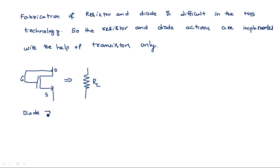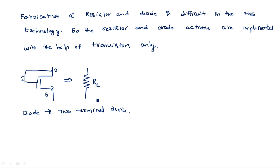Why is it called a diode? A diode is a two-terminal device. By short-circuiting the gate and drain, the three-terminal MOS transistor is converted into a two-terminal device with terminals drain and source. That is why it is called a diode — but we are not actually using any diode in the analysis. The name comes only because of the two terminals.